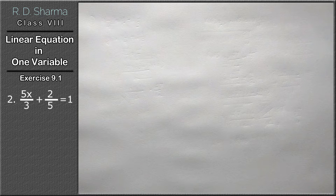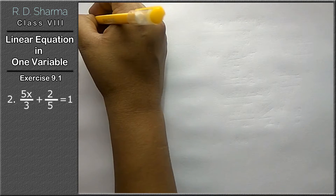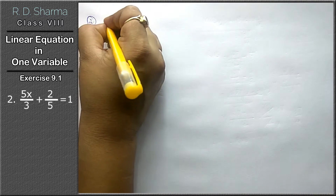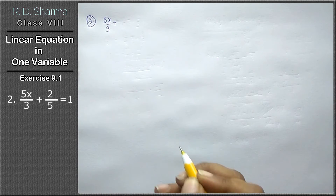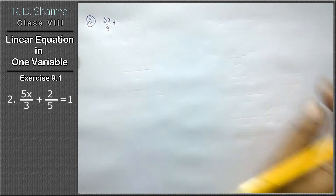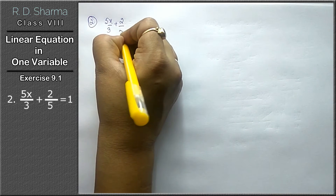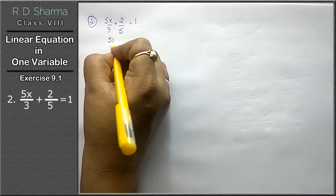Hello friends, welcome to Learn Maths. Let's do Exercise 9.1 — Linear Equation in One Variable, Question Number 2. Question number 2 is: 5x upon 3 plus 2 upon 5 equals to 1.